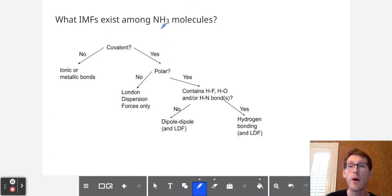Finally, we have NH3. Yes, this is a covalent compound because both are nonmetals. Is it polar? Well, we've got an N with a lone pair and three Hs.